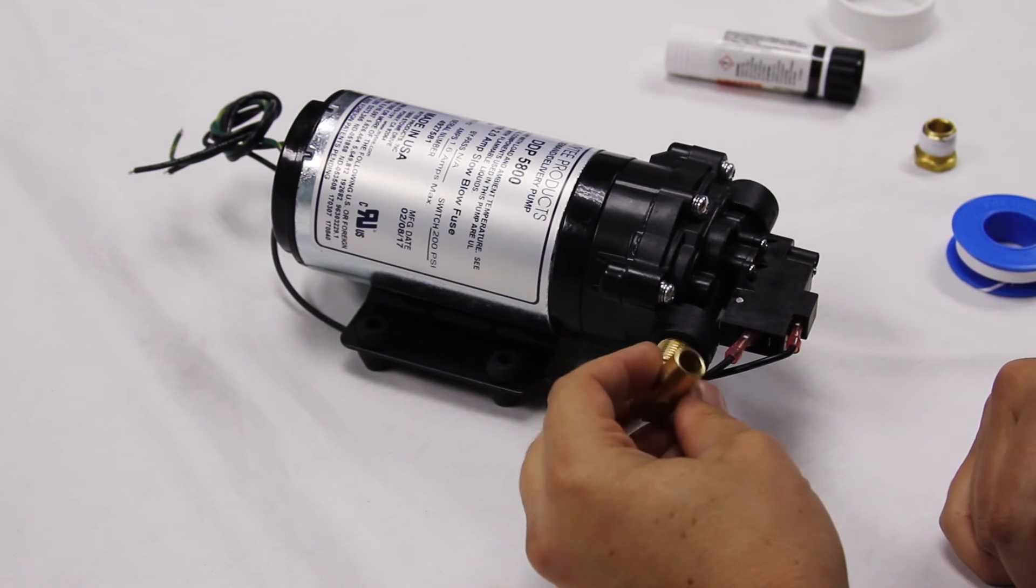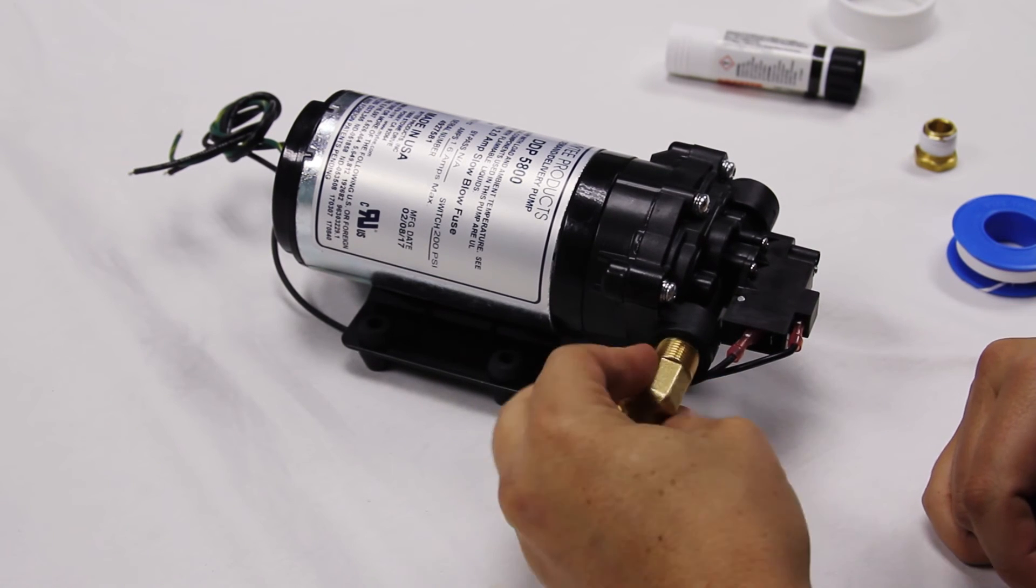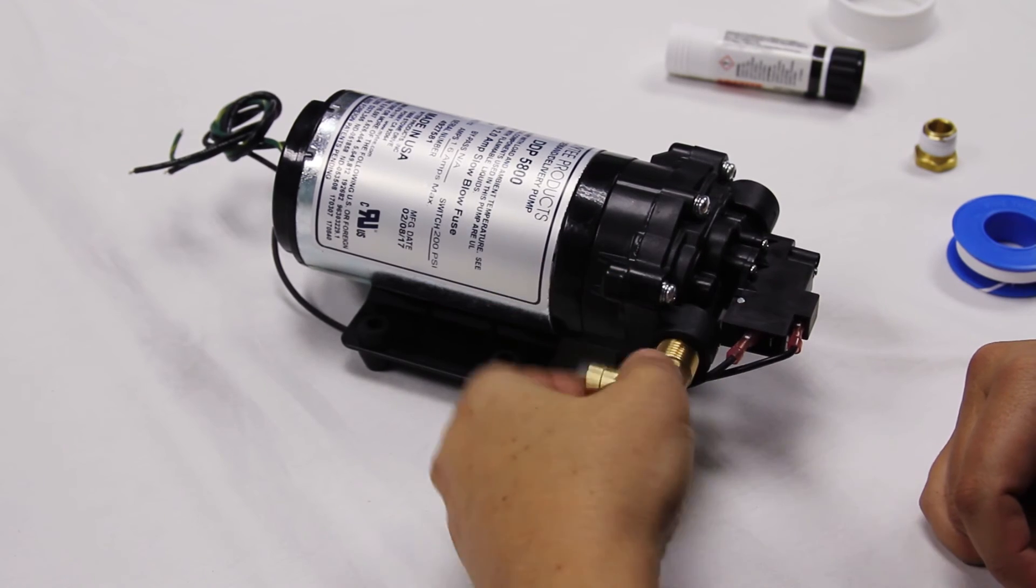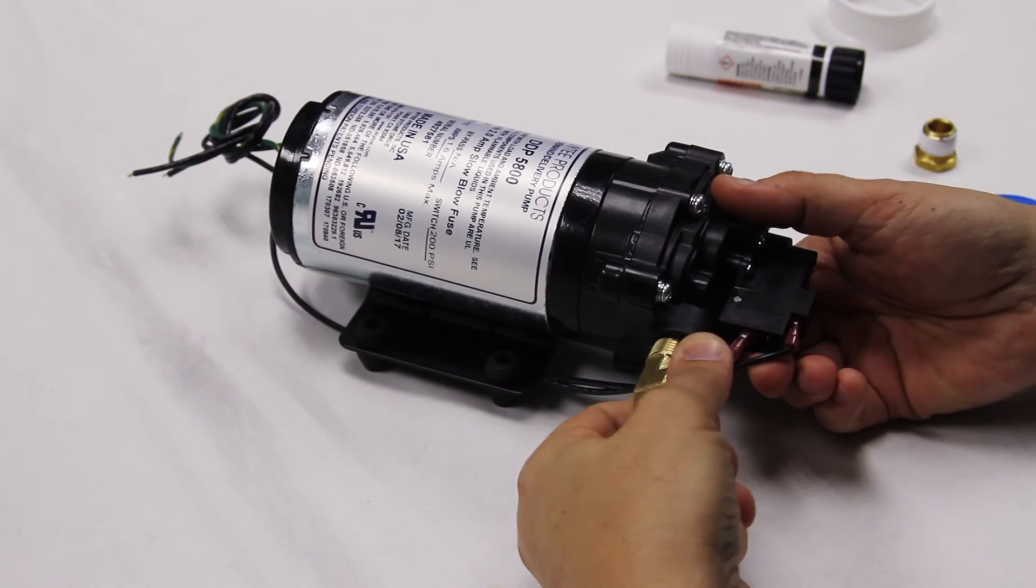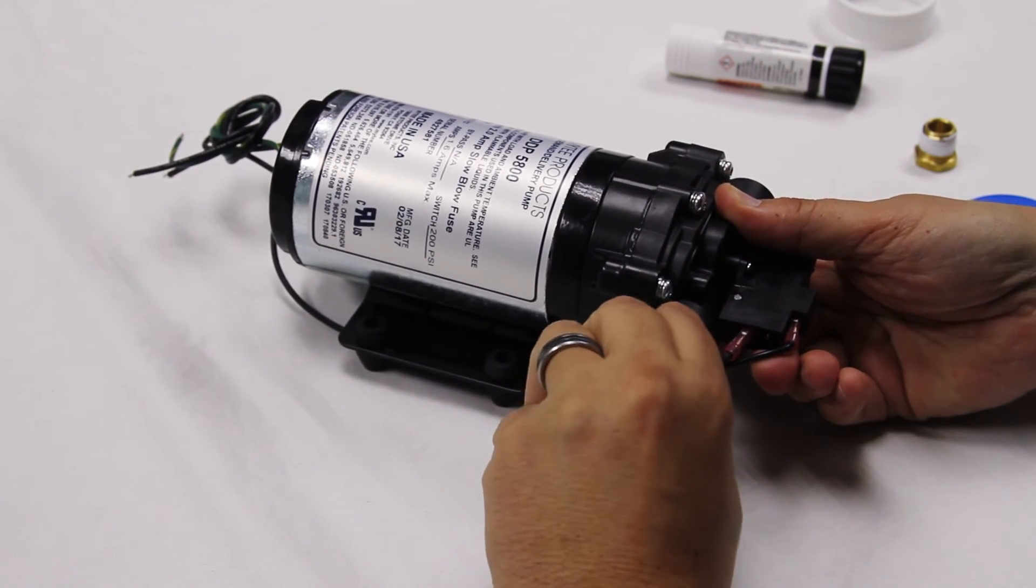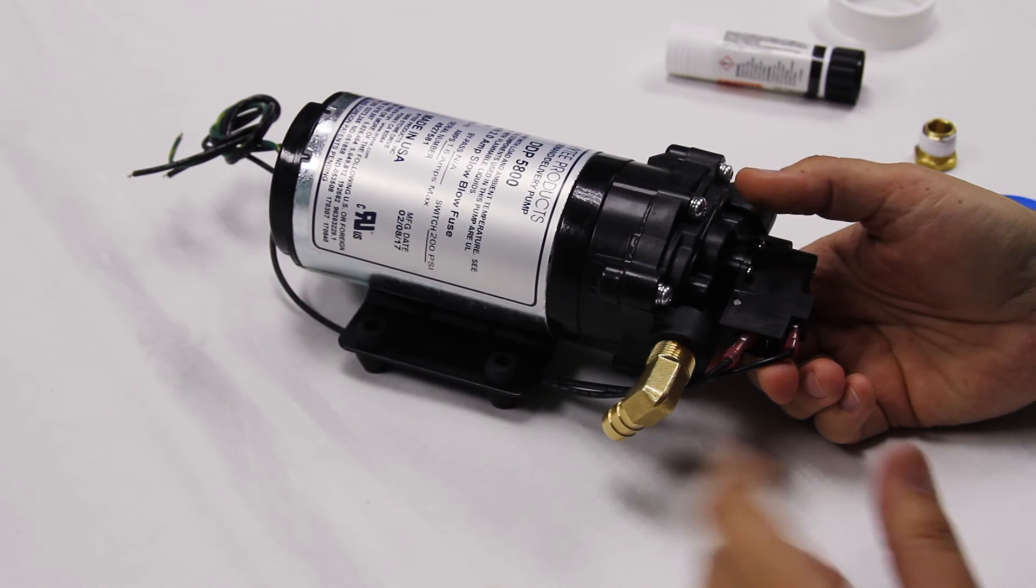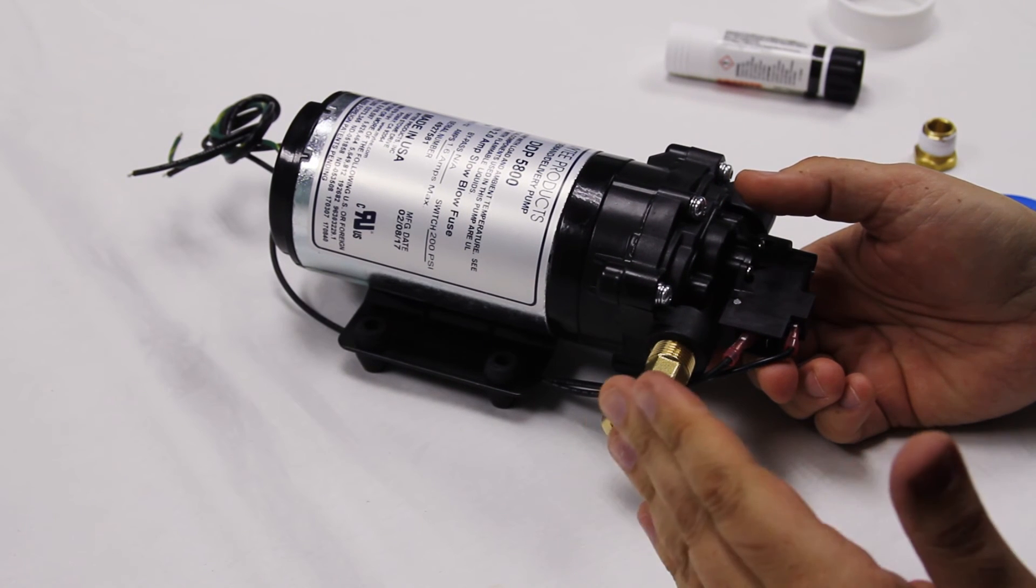Do yourself a favor, thread it by hand to the point where it's pretty hand tight, and then with the wrench or tool, a quarter of a turn is really all you need. Quarter of a turn, line the position up, that's it.